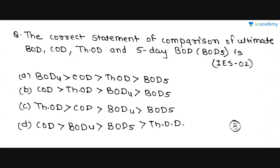The next question — asked in IES 2002 — is about the correct statement comparing ultimate BOD (L0), COD, THOD, and 5-day BOD (BOD5). There are two types of BOD here: ultimate BOD and 5-day BOD. Ultimate BOD is L0, as explained in the previous lesson on BOD using a graph curve. The correct option is B: COD > THOD > ultimate BOD > BOD5 (5-day BOD).